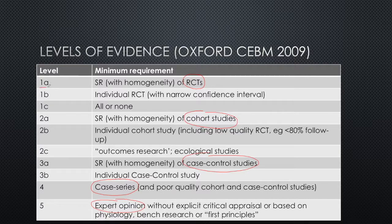For example, level 1a evidence means it is based on a good quality systematic review of multiple randomised controlled trials, and we'll take a look at what makes a good quality systematic review and what heterogeneity is in a later video. Another caveat in this table is that levels can be downgraded for quality — so a randomised controlled trial with a high risk of bias would be downgraded to level 2. Conversely, it is highly unlikely for lower level studies such as observational studies to be upgraded even if they are very high quality, because of the inherent bias associated with these types of studies.